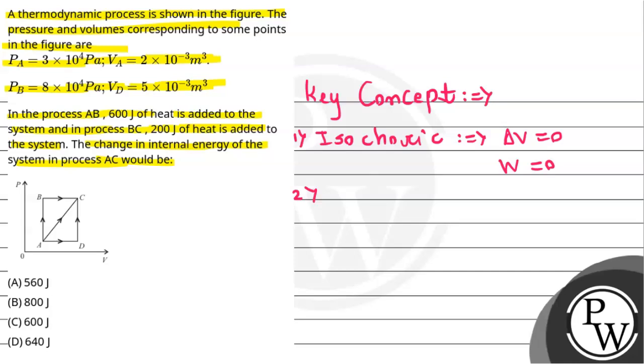Second, if we have an isobaric process, the amount of work done must equal pressure times the change in volume.